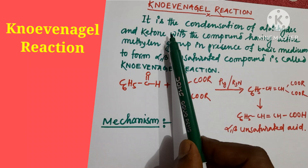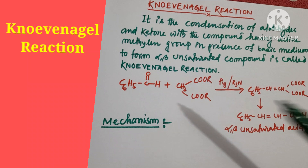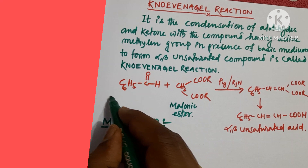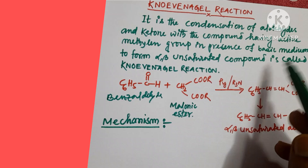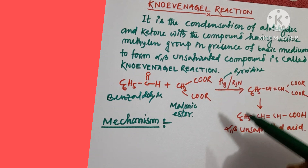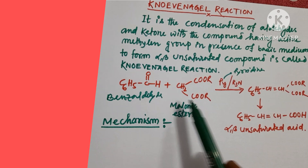You can take aldehyde or ketone with a compound having an active methylene group. Here you see the ester group — this is malonic ester. This is benzaldehyde. In the presence of a basic medium, that means pyridine or trialkylamine (R3N), that means a tertiary amine. Both condensation reactions take place in the presence of a basic medium.